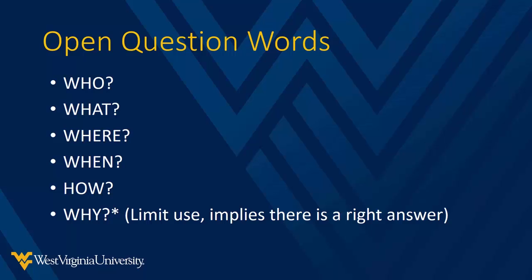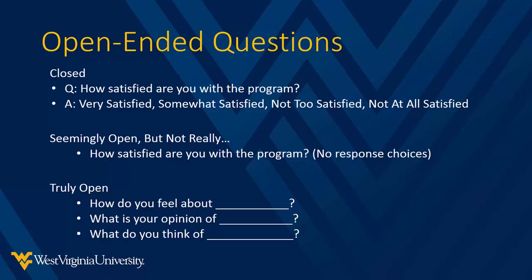Asking good questions is really a skill and an art. We always want open-ended, neutral, singular, and clear questions. Questions should typically begin with who, what, where, when, and how. We can use why questions but we want to be careful — asking 'why didn't you bring your child in when they first started developing symptoms?' implies judgment and a right answer. Instead, asking 'what did you do when your child first displayed symptoms?' is a better approach.